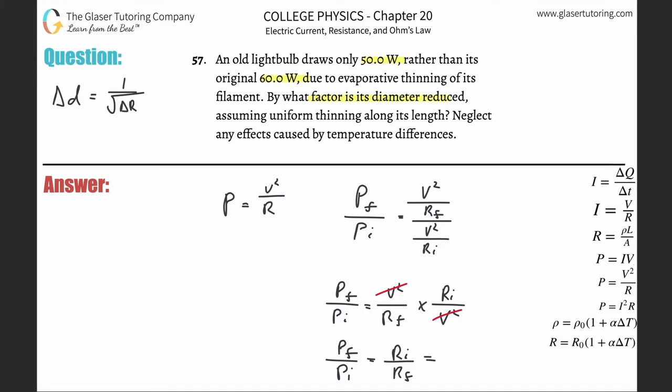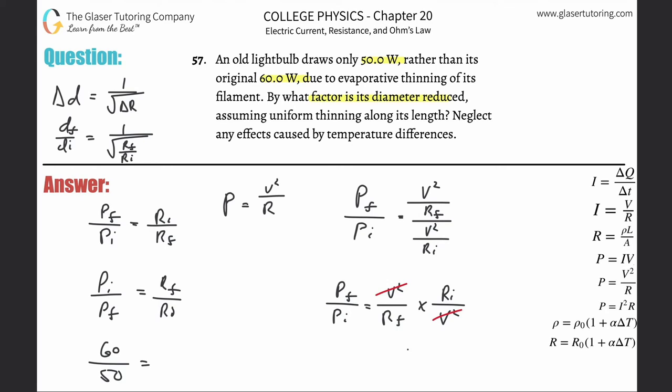So now what we have is we just have to simply plug this on in. I realize we really want to find by what factor was it reduced. So essentially now what I need, because I know I need my changing R value in there, what I want to do is solve this for RF over RI because I want to know by what factor the diameter was reduced. That means I have to find out, essentially what I'm asking is DF over DI, and that would be equal to 1 over square root of RF over RI. So all I'm going to do is just flip this side and flip this side. So that means PI over PF is equal to RF over RI. Now I just simply have to plug in the powers they told me. The initial was 60, the final was 50, and that's equal to RF over RI.